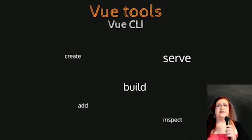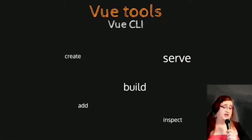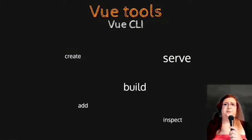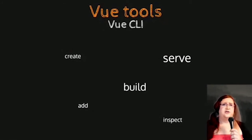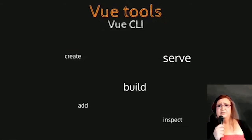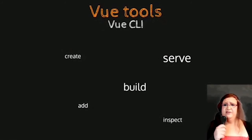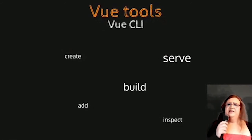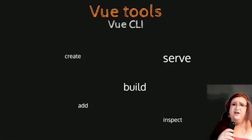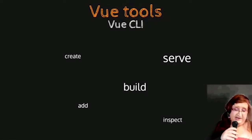The next useful thing is the CLI tool. It's like manage.py for Django. You can use it to create a new project, build your project, launch a development server, add new tasks, and add blueprints to your project. For example, if you didn't select tests and you want to add tests, you can add them on the fly. Very, very useful.